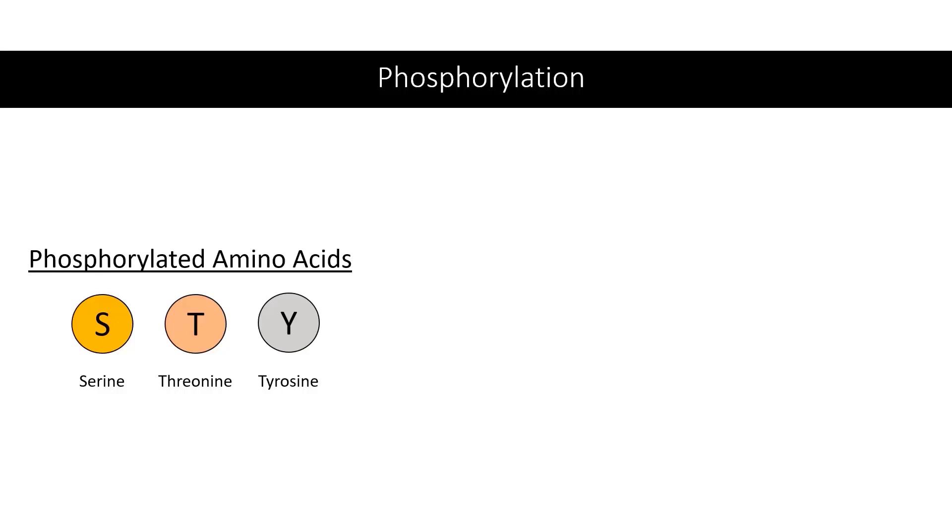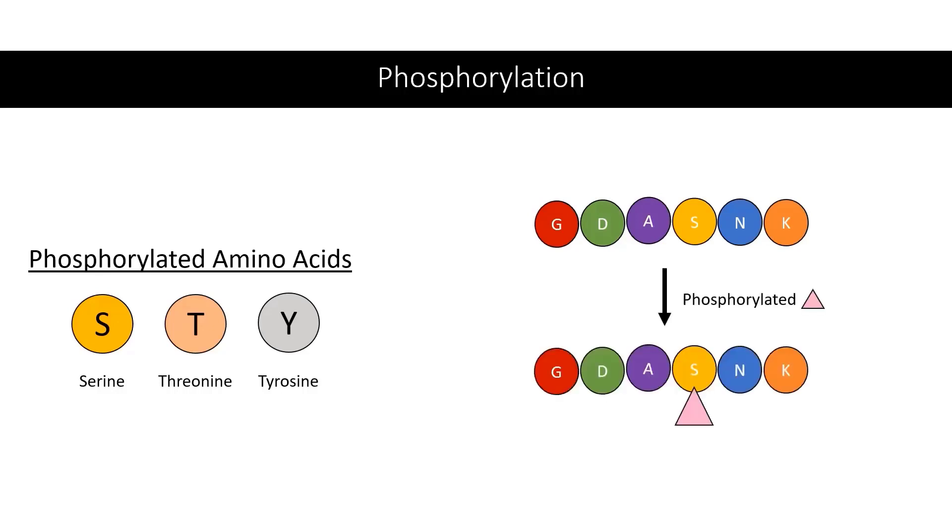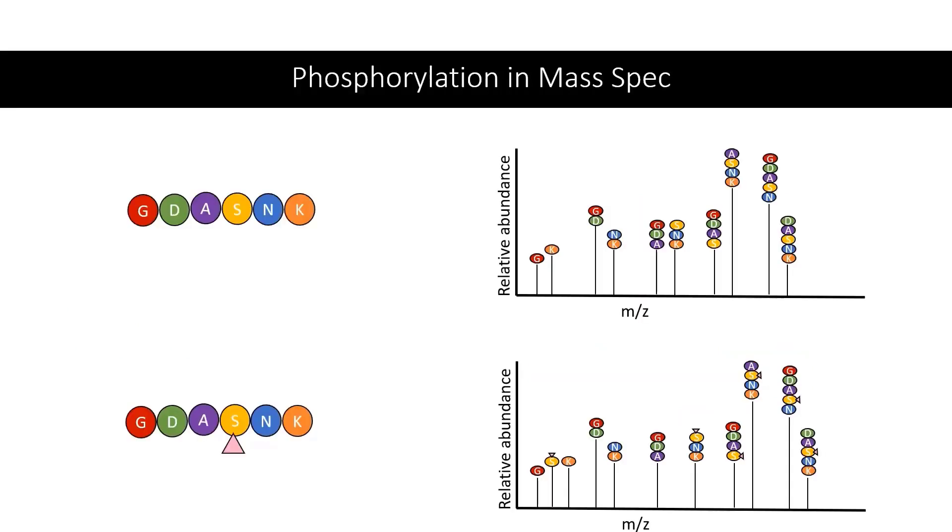To do so, it's important to note that the three primary amino acids that undergo phosphorylation are serine, threonine, and tyrosine. So let's go back to our previous example and peptide of interest. In this particular peptide, if it were to be phosphorylated, only the serine amino acid would be able to be phosphorylated. Now, how might this show in our MS-2 spectra?